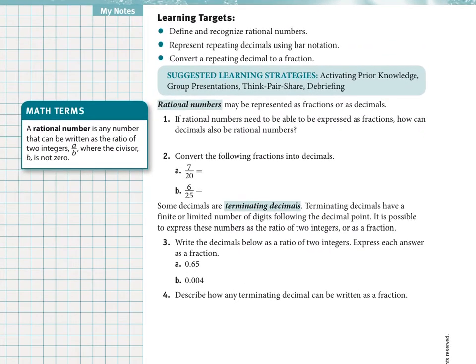If rational numbers need to be expressed as fractions, how can decimals also be rational numbers? Let's do a quick example. Let's say the number is 0.123. We want to express that as a fraction. Since it terminates, we can do that. The numerator becomes the digits we see, and the denominator is just counting the place values - tenths, hundredths, and thousandths. So it would be 123 over 1000. Any decimal that terminates is a rational number.